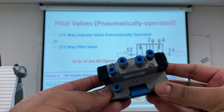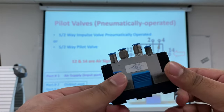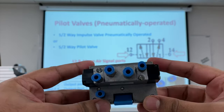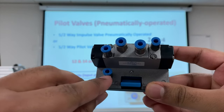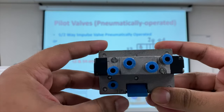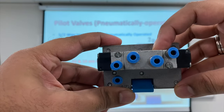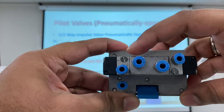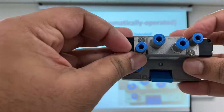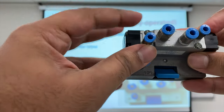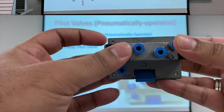What you see in front of you is the 5x2-way pilot valve, also called the 5x2-way impulse valve. Port 1 is where the air supply is connected. Over here we have port 2 and port 4, which are the output ports. And these two ports — port 12 and port 14 — are the signal ports that were just explained.